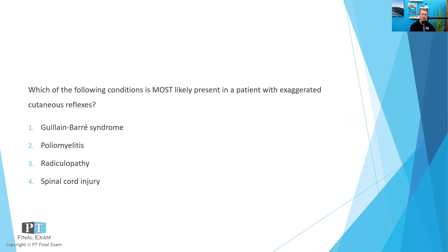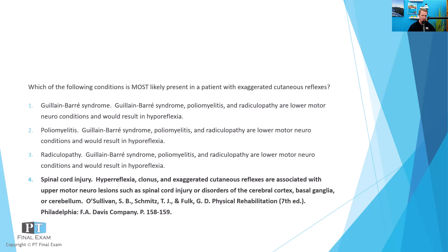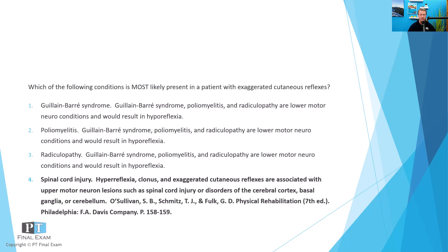In this case, we're looking for something that has an exaggerated cutaneous reflex. If you know that upper motor neuron conditions are likely to result in exaggerated reflexes — both deep tendon reflexes as well as cutaneous reflexes — then you'll quickly identify that the correct answer here is spinal cord injury. Hyperreflexia is one of the key characteristics of someone who has a spinal cord injury. This is classified as an upper motor neuron lesion, which is usually a disorder of the cerebral cortex, basal ganglia, the cerebellum, or the spinal cord. A spinal cord injury is likely to result in hyperreflexia, clonus, or exaggerated cutaneous reflexes.